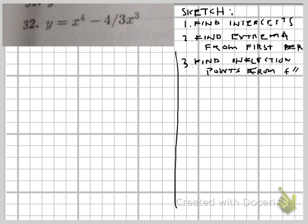So the question is about sketching a curve using information about extrema and the inflection points. And I think the first thing to do would be just take the function and find the intercepts.